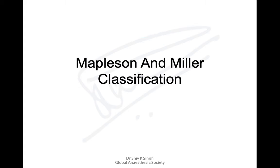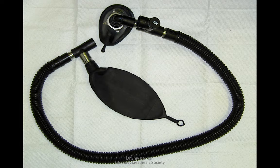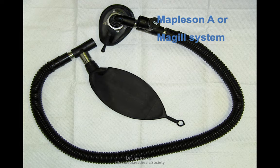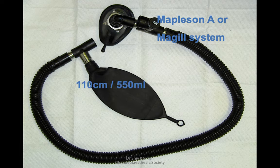We go through the Mapleson and Miller's classification of breathing systems. The first is Mapleson A — you would have seen this. This is the Magill system, which is large. You can see there is a mask, then the APL valve very near to the mask, the other end attached to the machine, and a reservoir bag. You should know the length: it is 110 centimeters, and these 110 centimeters can hold a volume of 550 ml.